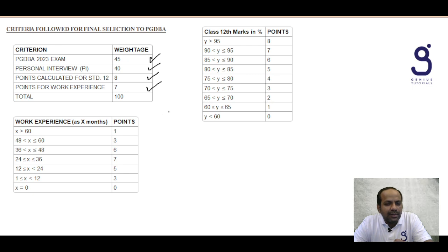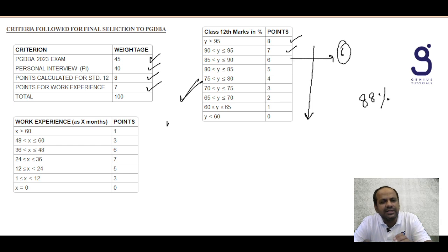Weightage allotted to 12th marks score: if you have more than 95% marks, 8 points are there. 90 to 95, 7 points. If you have 88% marks, the points for this will be 6. You will get 6 marks for your 12th standard marks depending upon this weightage.